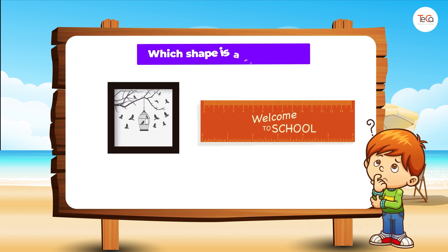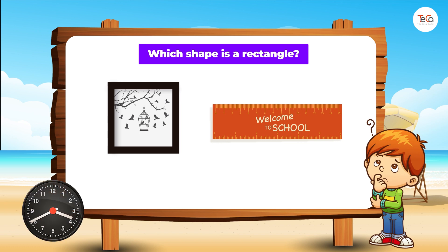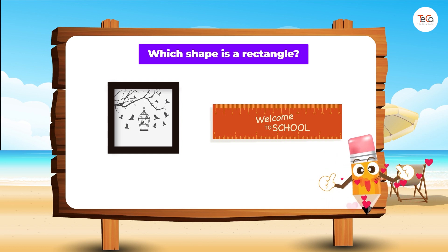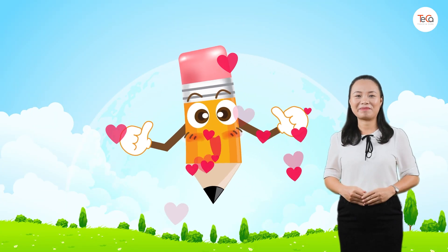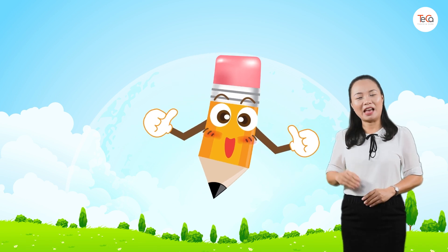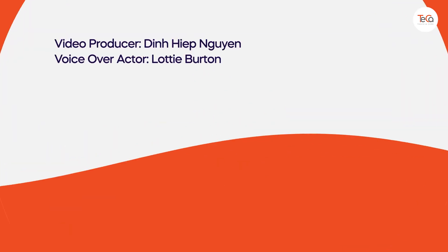Which shape is a rectangle? Right, the shape of the ruler is a rectangle. Great, you've finished. Bye for now and see you soon in the next lesson!